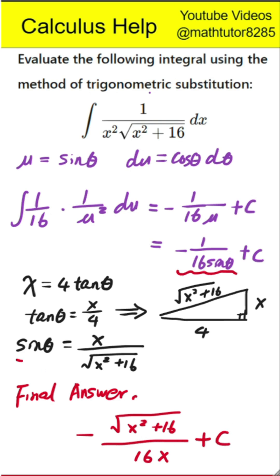When you see a square root of x squared plus a constant, use x equals a times tangent theta. This turns the square root into a neat secant expression, which simplifies the integral greatly.